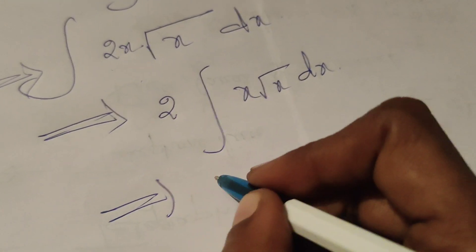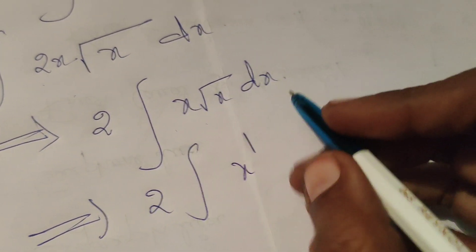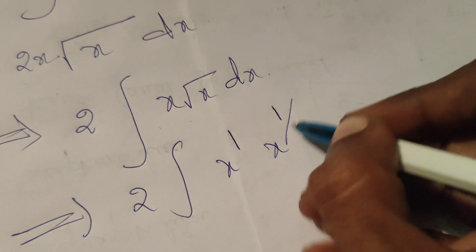Now simplify this. 2 into x power 1. Root x means write x power 1 by 2 dx.